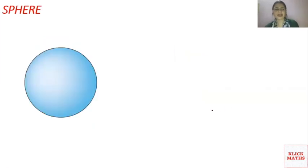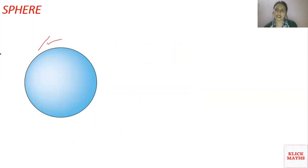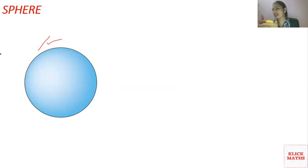The next shape is a sphere. Now, what is the difference between a sphere and a circle? You can see: a cylinder has its own base — if you keep it down, it will not move because it has a flat base. But if you see this sphere, it will move.